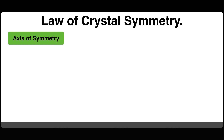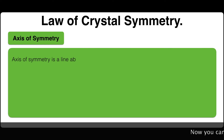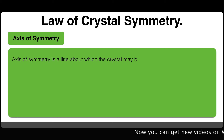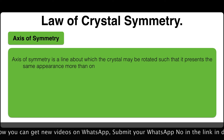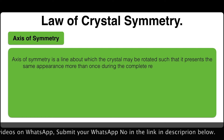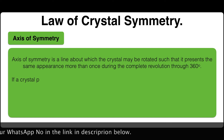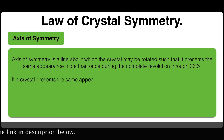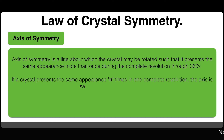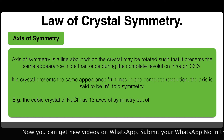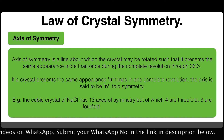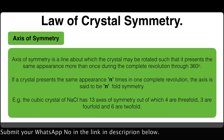Axis of symmetry is a line about which the crystal may be rotated such that it presents the same appearance more than once during a complete revolution through 360 degrees. If a crystal presents the same appearance n times in one complete revolution, the axis is said to be n-fold symmetry. For example, the cubic crystal of sodium chloride has 13 axes of symmetry, out of which 4 are 3-fold, 3 are 4-fold, and 6 are 2-fold.